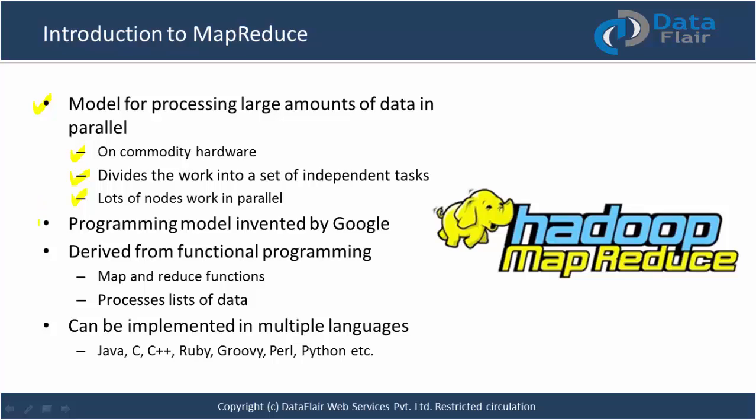Google is the mother of all these inventions, and the MapReduce programming model was also invented by Google. It is derived from functional programming — a very old concept that has been in the industry since the 90s. There are two functions: the Map function and the Reduce function, which are the two phases combined together and called MapReduce.